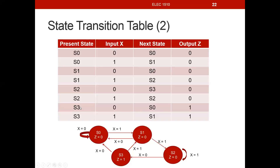Finally, when our present state is S3 and our input x is a 0, our next state is S0. When we're in state S3 and our input x is a 1, our next state is S1. Notice that whenever we're in state S3, our output z will always be a 1. This is the only place in our state diagram where the output z is a 1 — when we're in state S3.